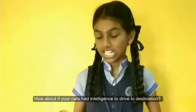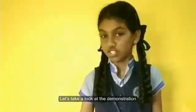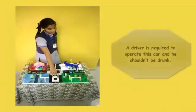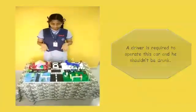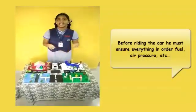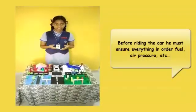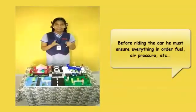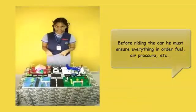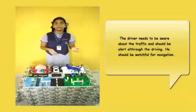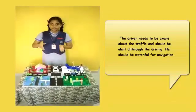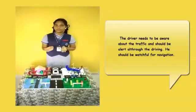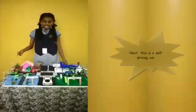If your cars had intelligence to drive to a destination, let's take a look at the demonstration. This is a manual car. A driver is required to operate this car and he shouldn't be drunk. Before riding the car, he must ensure everything is in order — fuel, air pressure, etc. The driver needs to be aware about the traffic and should be alert all through the driving. He should be watchful for navigation.